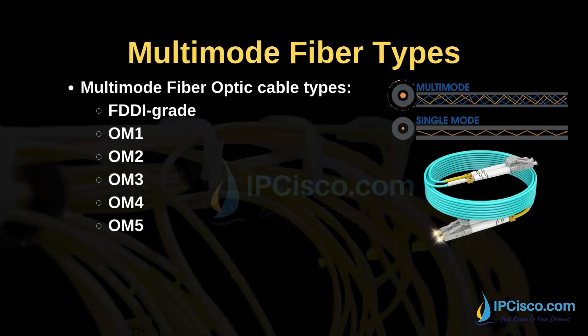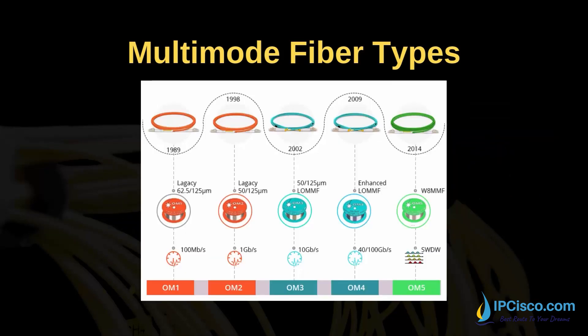There are six types of multi-mode fiber cable: FDDI grade, OM1, OM2, OM3, OM4, and OM5. Here, OM stands for optical multi-mode. Here are the types of multi-mode fiber optic cables and their development years. You can also see the jacket colors of these fiber optic cables: orange, aqua, and lime green. The core size and the speed they support is also given here. FDDI is not shown because it is very old.